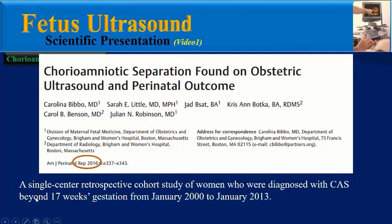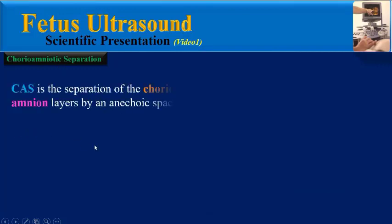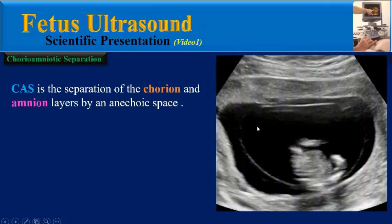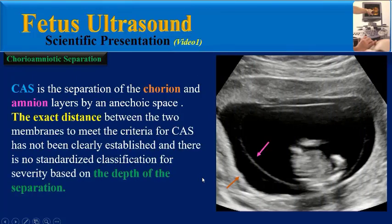The last key reference cited about chorioamniotic separation was published in 2016. It is a single-center retrospective cohort study of women diagnosed with CAS beyond 17 weeks gestation from 2000 to 2013 — about 14 years. CAS is the separation of chorion and amniotic layers by an anechoic space.